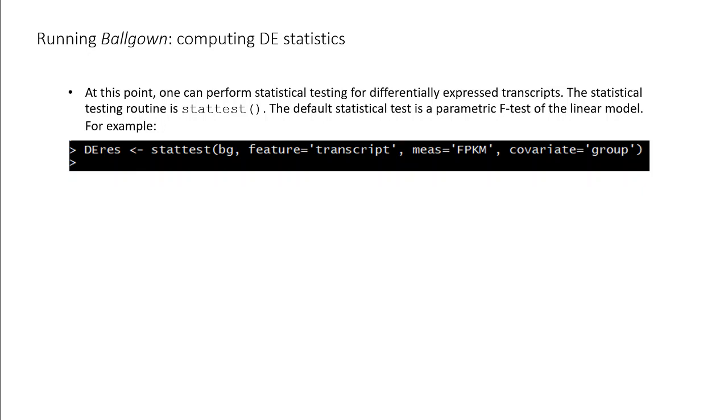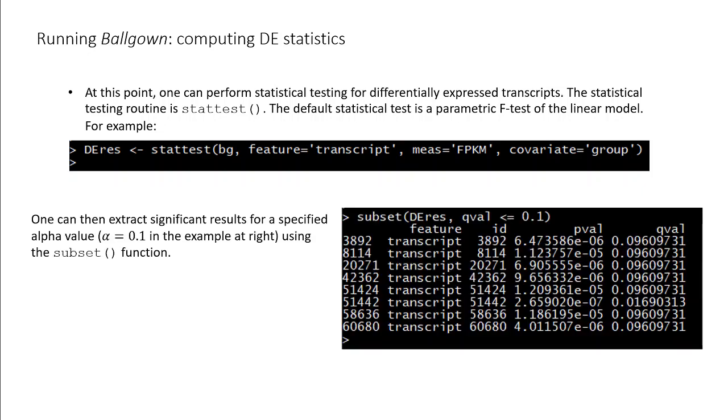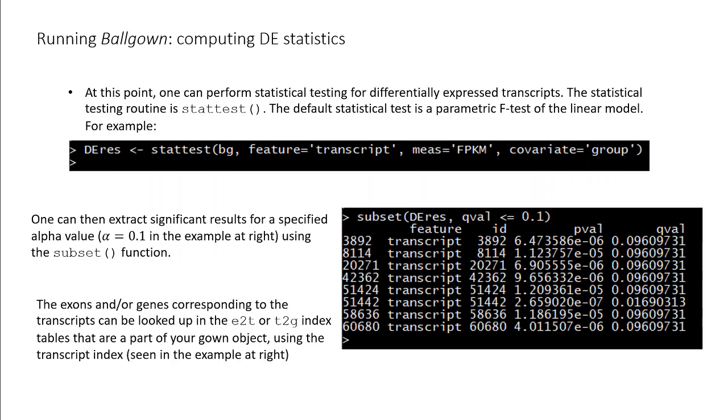Note that, unlike our use of DESeq2, here we're using the FPKM normalization. One can then extract significant results for a specified significance level using the subset function. Here, the first column represents the type of feature, and the second column represents the Ballgown assigned ID.